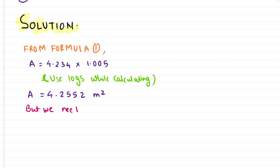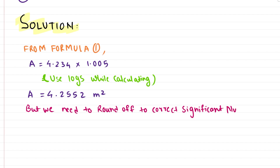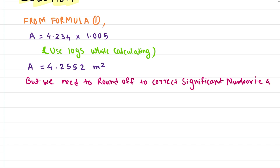We need to round off our answer to 4 significant figures. Our calculated value is 4.2552 — counting one, two, three, four digits, we round off at the fourth digit. Since the next digit (2) is not greater than five, the fourth digit remains unchanged. Therefore, the area of the largest surface is 4.255 meter squared, expressed to correct significant figures. This is our final answer for part one.